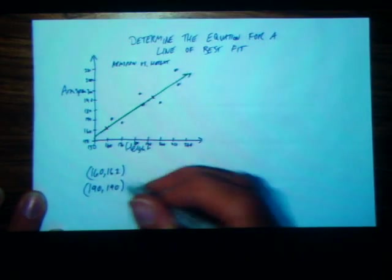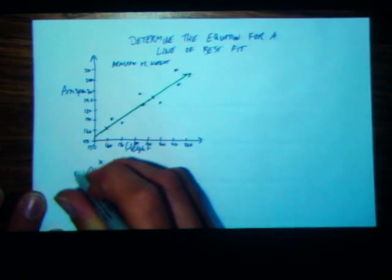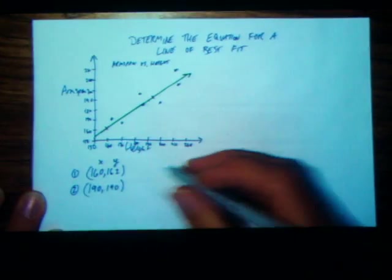Those are our two points. As always, this is our x-coordinate, this is our y-coordinate, this is 0.1 and 0.2. So our first step is going to be to find the slope between those points.